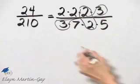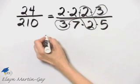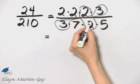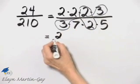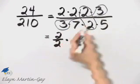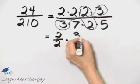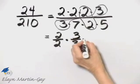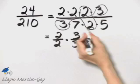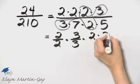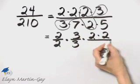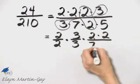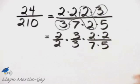Now, I'm going to write this a little differently. I'll write this as 2 over 2 times 3 over 3, and then we'll talk about why I'm writing this way, times, I have 2 times 2 left in the numerator and 7 times 5 left in the denominator.